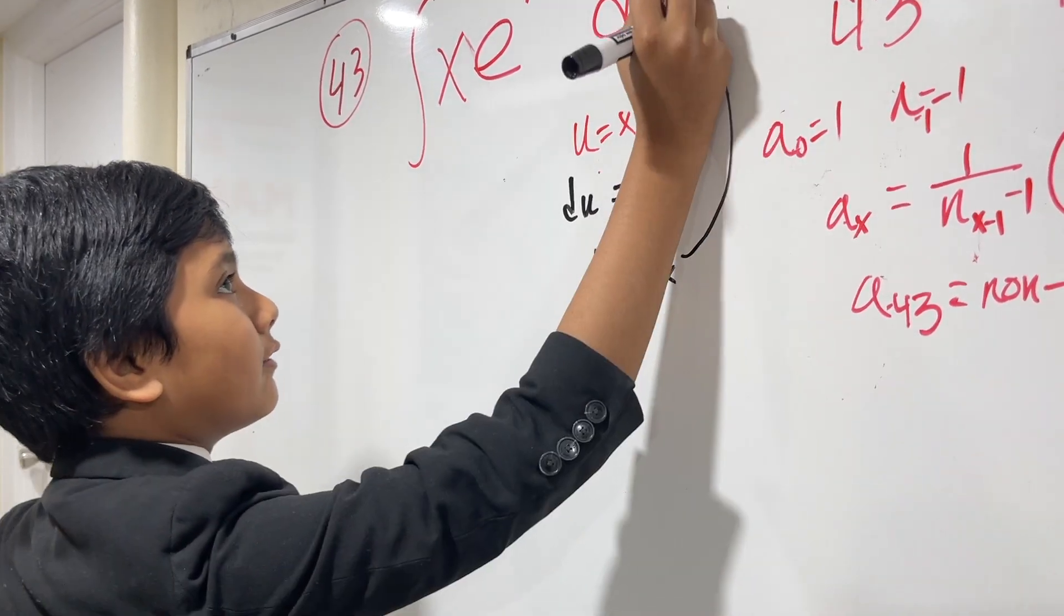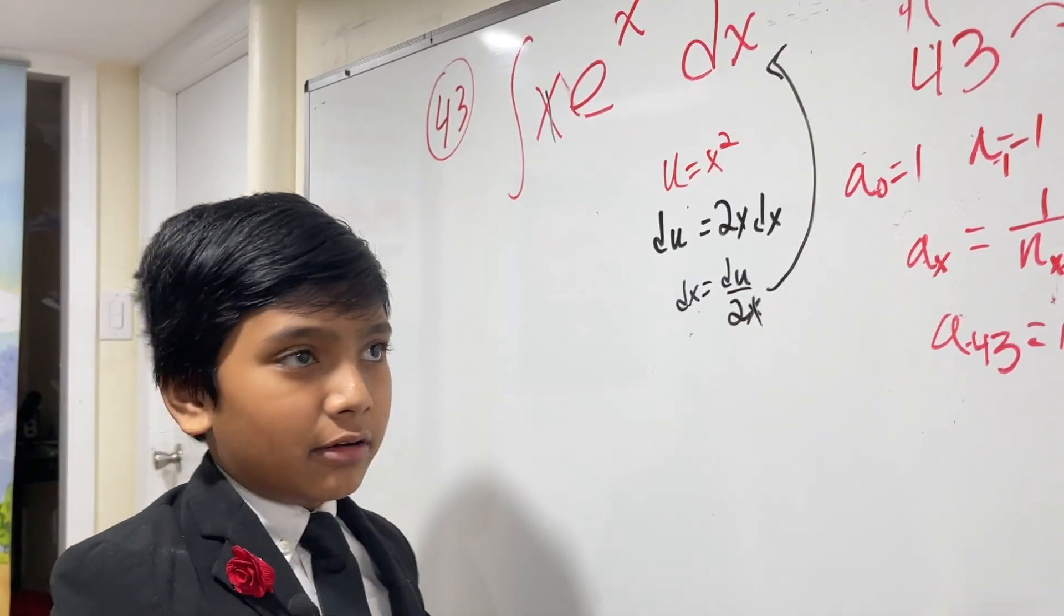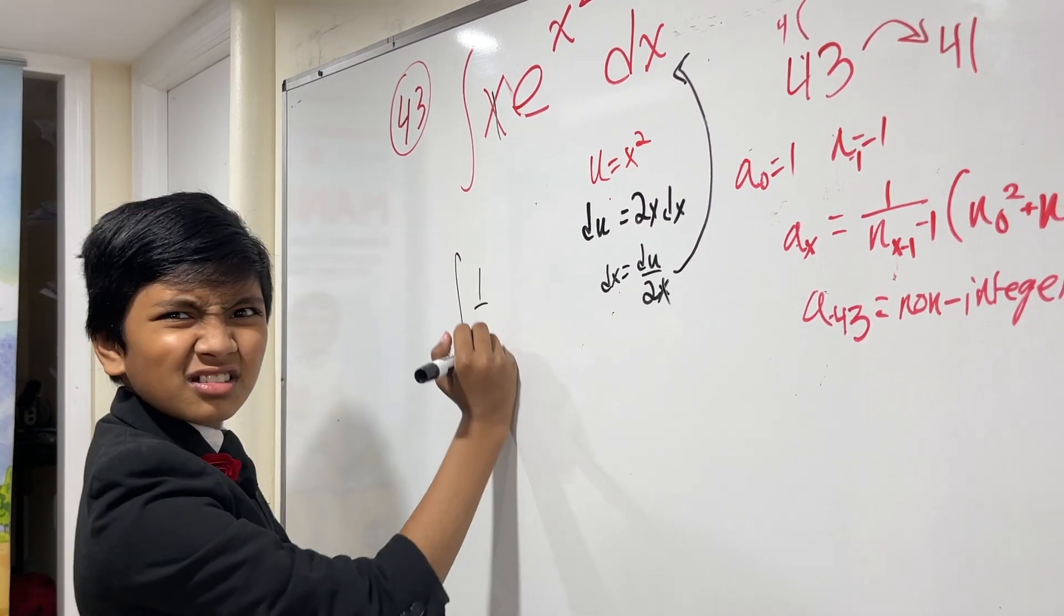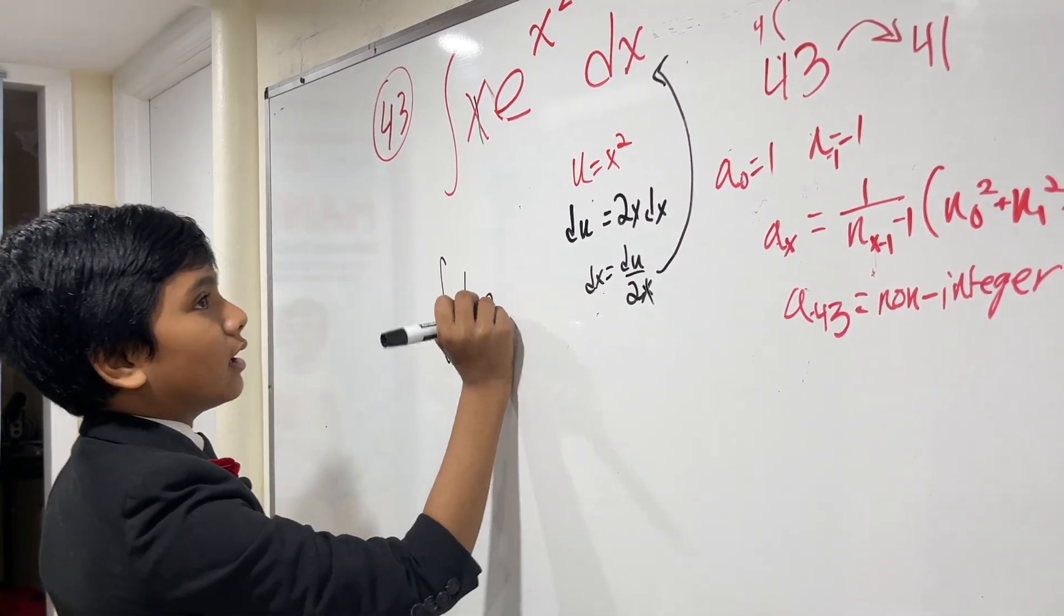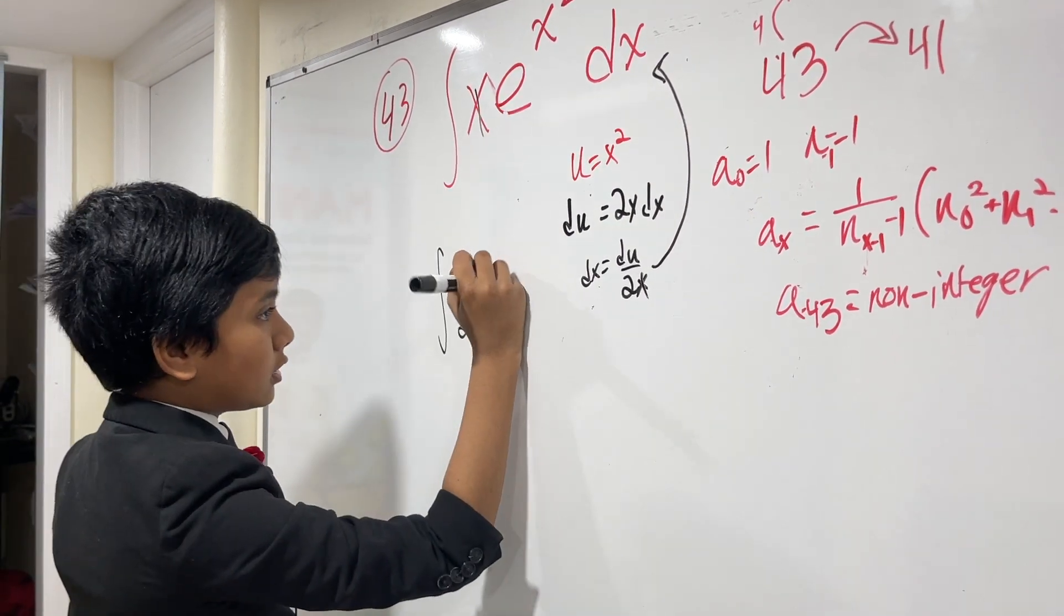Hopefully, you can see that once I plug this in, these x's will cancel out and we'll just be left with the 1 half. So, we get 1 half e to the, and I made u x squared, because this x squared is on the top here.